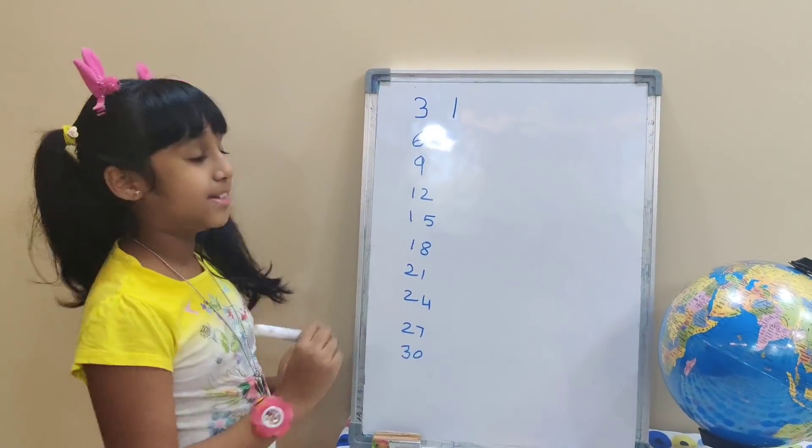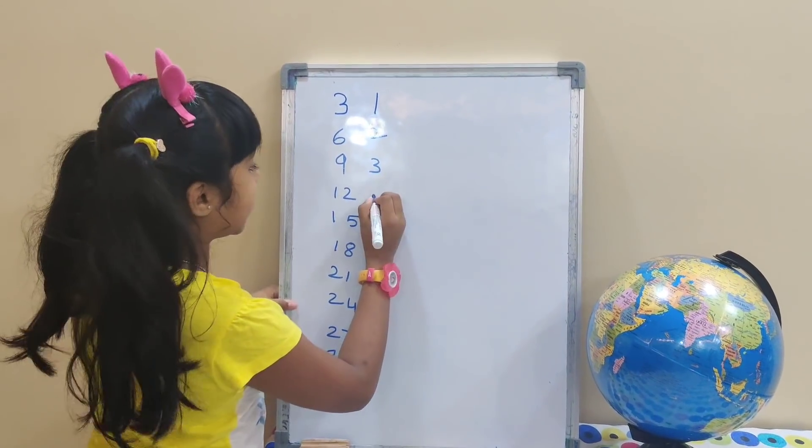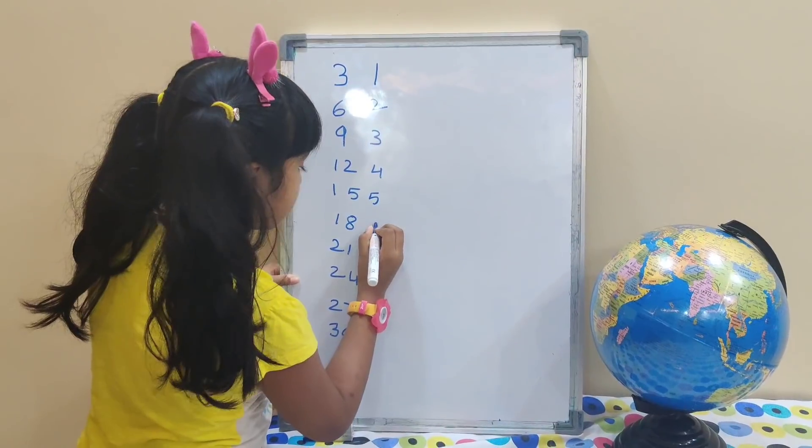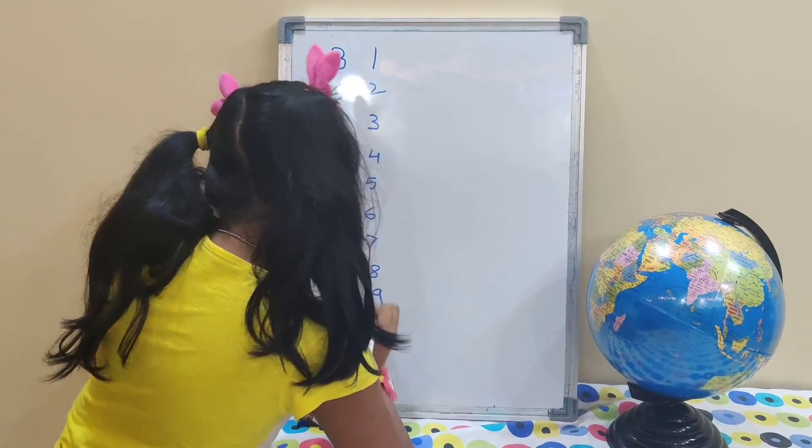Now 1's table: 1, 2, 3, 4, 5, 6, 7, 8, 9 and 10.